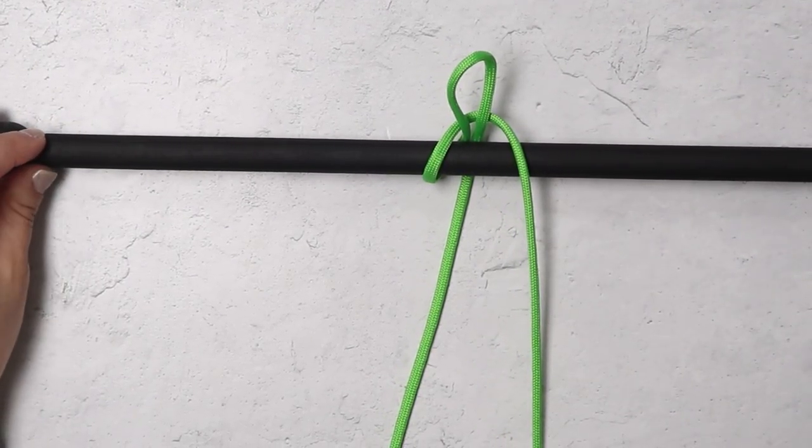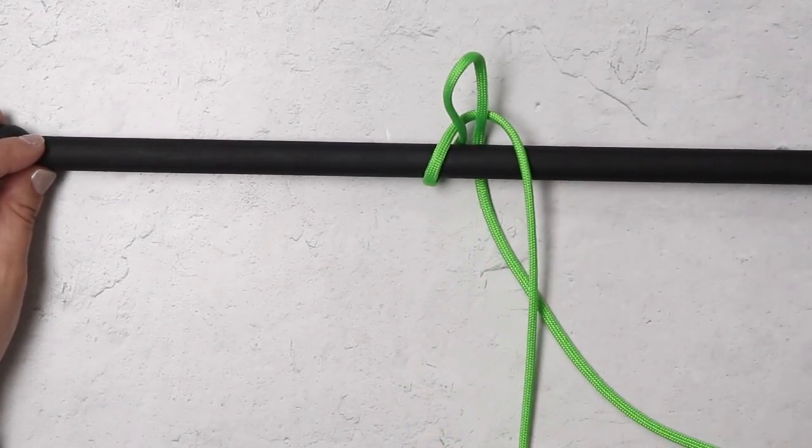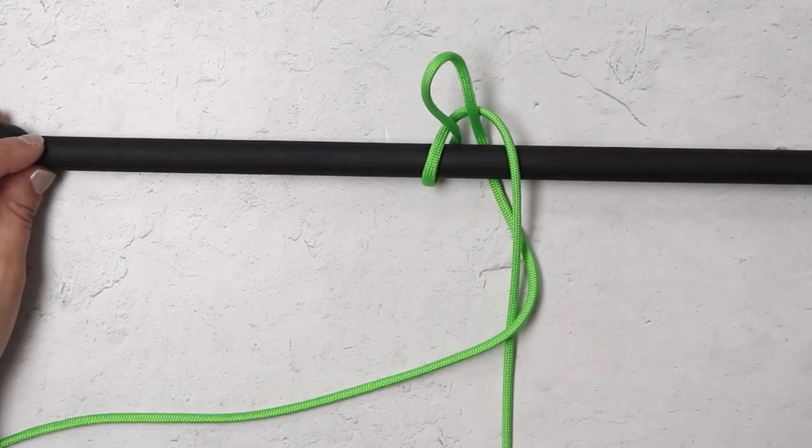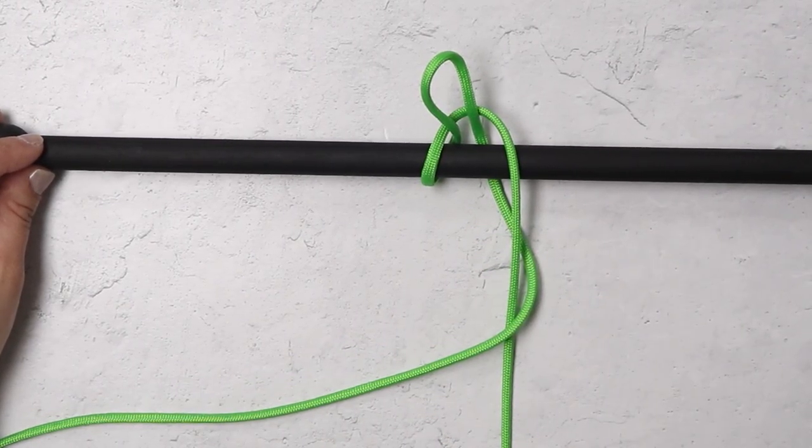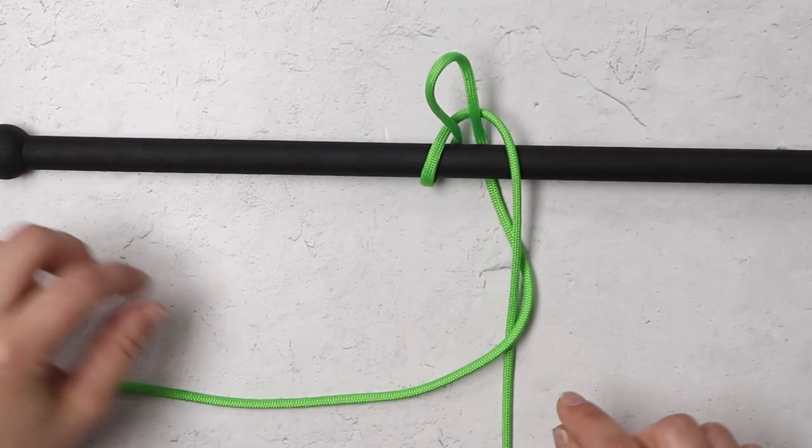Your next step will be to take the working end on your left hand side now and pass it underneath the one that was on the right. Then you'll pass your right hand strand over the other cord.